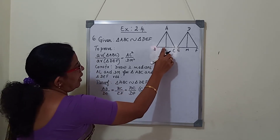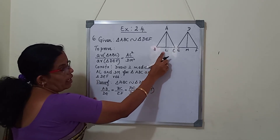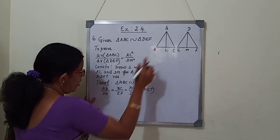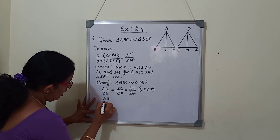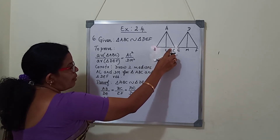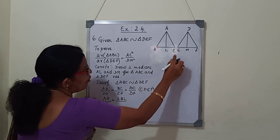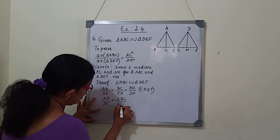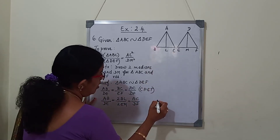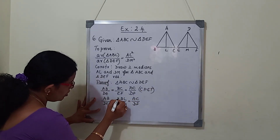Now, since AL and DM are the medians for these two triangles, the median divides the opposite side into two equal parts. So BL equals LC and EM equals MF. Therefore, instead of BC we can write 2BL and instead of EF we can write 2EM. So BC equals 2BL and EF equals 2EM. The 2s cancel.